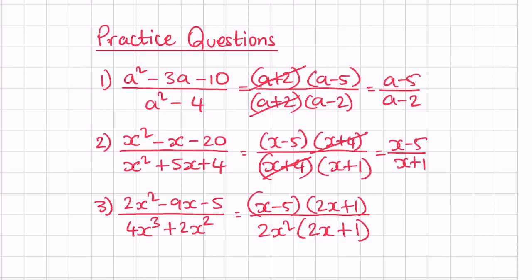I realized there may be a mistake — I can see 2x plus 1 on the top, so I need something similar on the denominator, either x minus 5 or 2x plus 1, so I can cancel them out. Dividing 2x plus 1 by 2x plus 1 means they both cancel out, and we're left with x minus 5 over 2x squared. That's the answer.